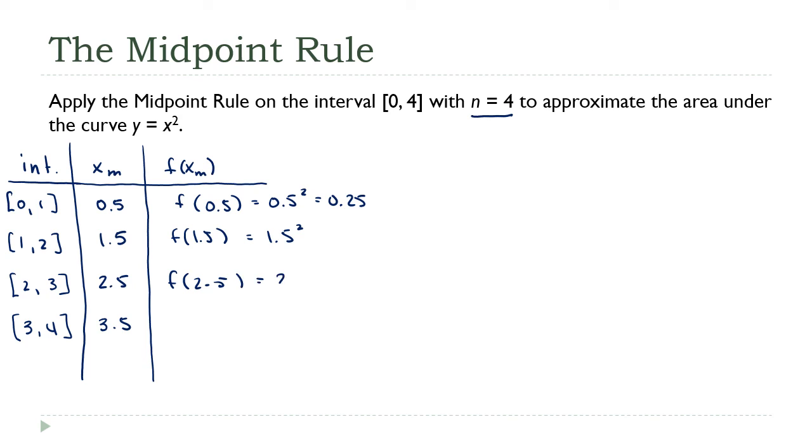Then we're going to do the others. I didn't work out each individual one—I just have the final answer here—but I'll write these all out. You're going to add up all of these values and multiply that sum by Δx. What was Δx here? Δx is (b - a) over n. For our example, that's (4 - 0) over 4, so Δx is just 1. So actually you're really just going to be adding up all those function values.